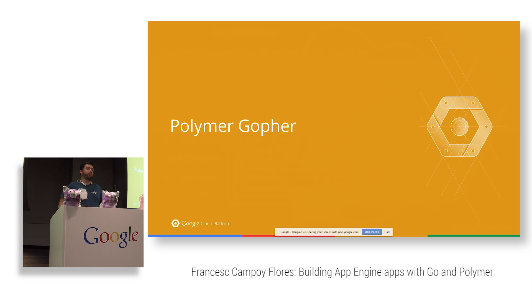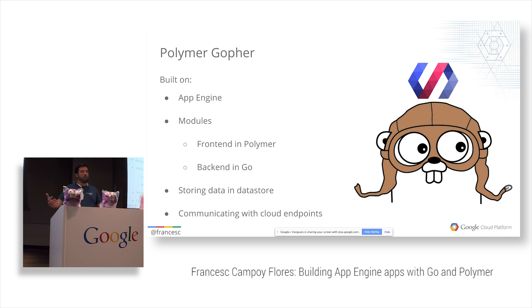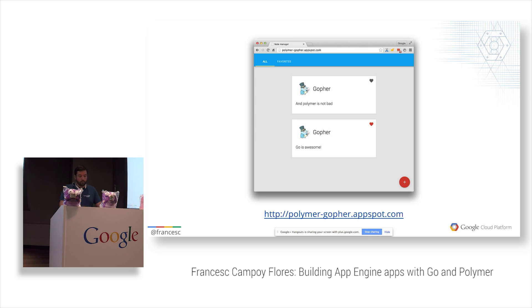Now Polymer Gopher, which is going to be almost as successful as Angry Birds, hopefully. It's an App Engine app and we're going to use modules. The front-end module is going to be written in Polymer — which is not a language, it's actually HTML, CSS, and JavaScript. Those are completely static, so we're going to be serving static files. The back-end is written in Go completely, we're going to store all the data in the Datastore, and we're going to communicate with Cloud Endpoints.